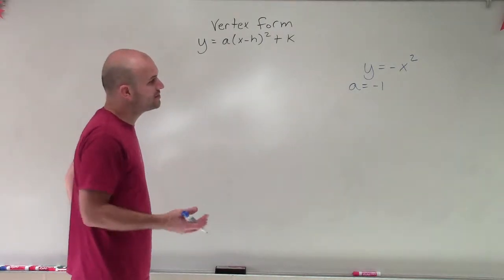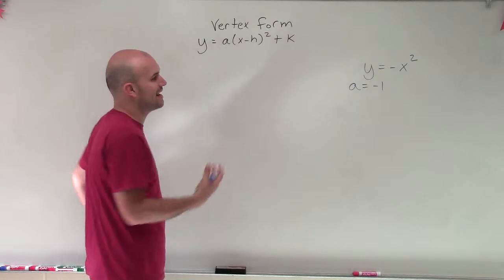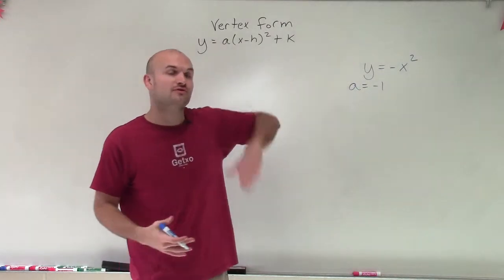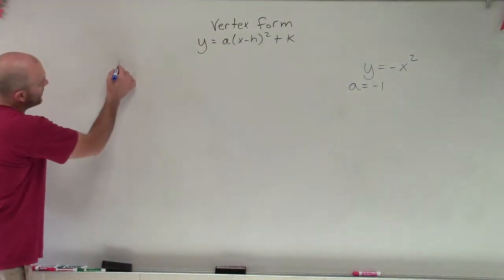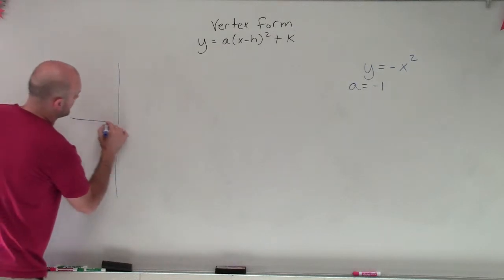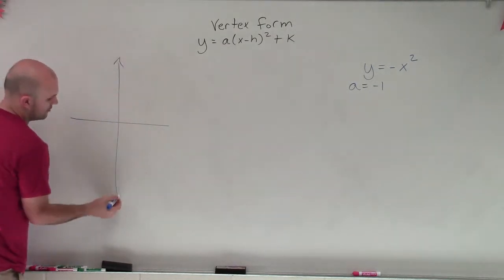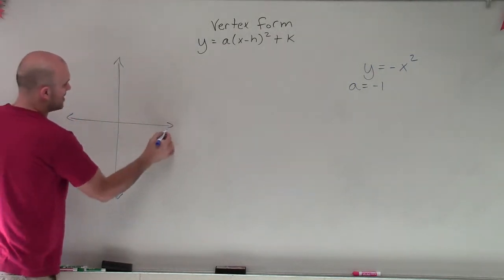So what we can do is we can show this by, remember whenever a is negative, our graph is going to be reflected over the x-axis. Now, by looking at it's going to be reflected over the x-axis, what we can see is go back and look at our parent graph.